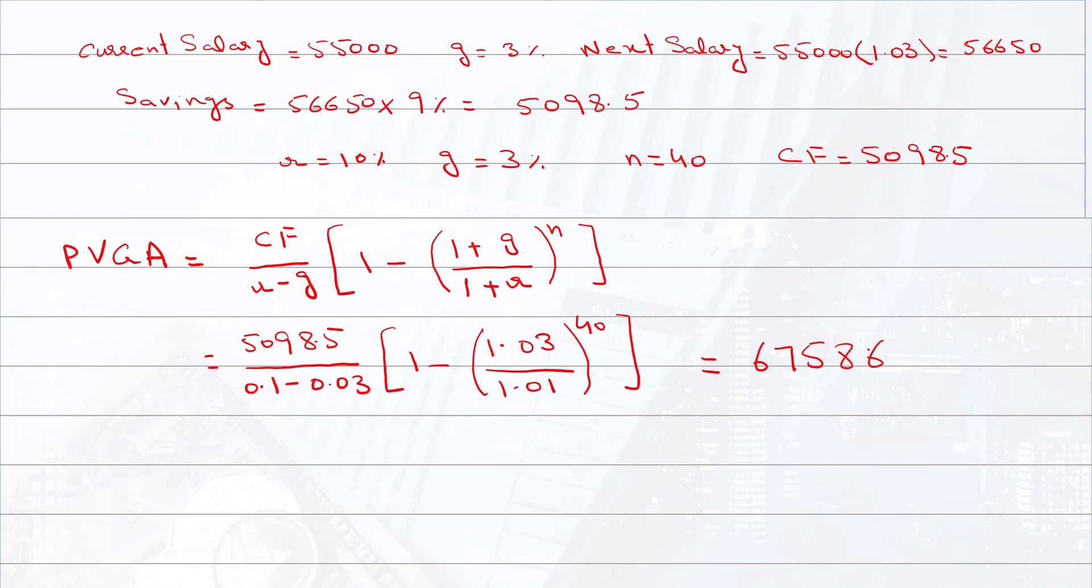But in the question, we have to find what you will have after 40 years when you retire, so we have to calculate the future value of this amount. Future value is equal to present value into (1 plus r) raised to power n. So we have present value of $67,586 and 1.1 raised to power 40.